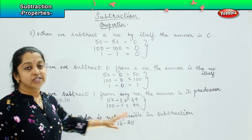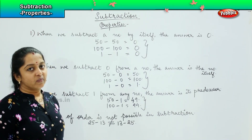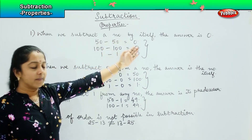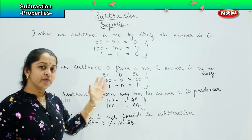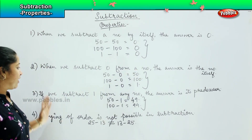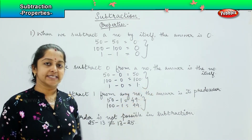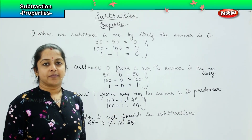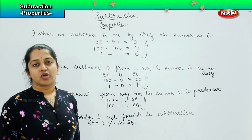So, changing of the order is not possible in subtraction. To summarize, we will just recap whatever we learnt in properties. The first one says when we subtract a number by the number itself, your answer is zero. The second one says when we subtract zero from the given number, the answer is the number itself. Third one says if we subtract one from any given number, the answer is its predecessor. And the last one says that changing of order is not possible in subtraction. Using these concepts, we will be solving our sums.